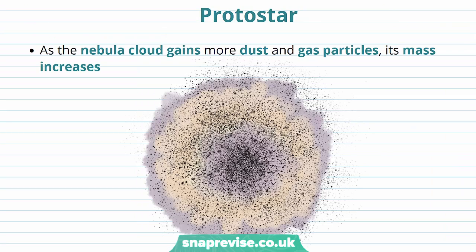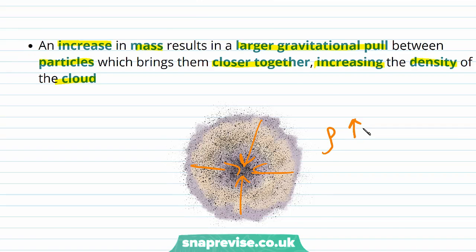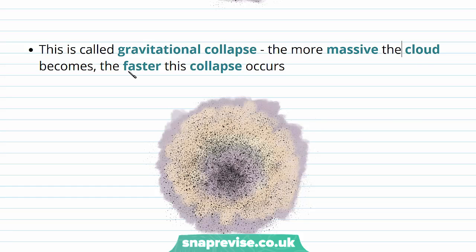Now we're going to discuss the second stage in a star's lifetime, which is a protostar. As the nebula cloud continues to gain more dust and gas particles, its mass is going to increase. As these dust particles are attracted towards the centre of the nebula, its mass increases. An increase in mass results in a large gravitational pull between particles, which brings them closer together and increases the density of the cloud. This process is called gravitational collapse. The more massive the cloud becomes, the faster this collapse occurs, as these particles accelerate towards the centre.